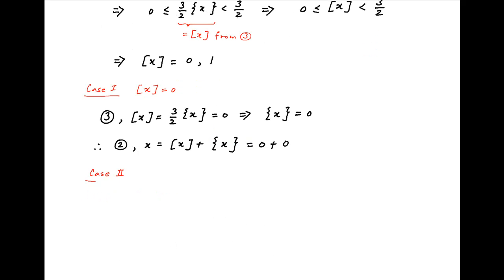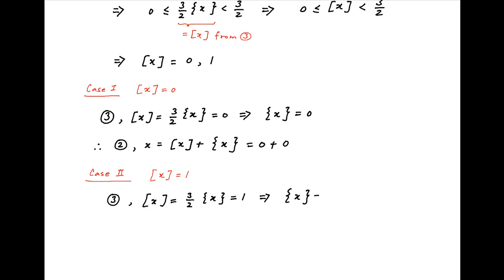Now consider the second case when the integral part of x is equal to 1. From result 3, the integral part of x equals 3/2 times the fractional part of x. If this equals 1, then the fractional part of x is equal to 2/3. Therefore, x — which equals the integral part of x plus the fractional part of x — is equal to 1 plus 2/3, which equals 5/3.